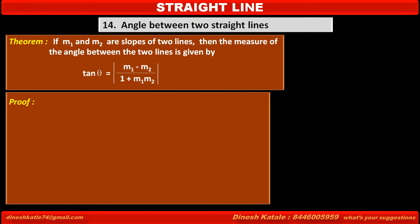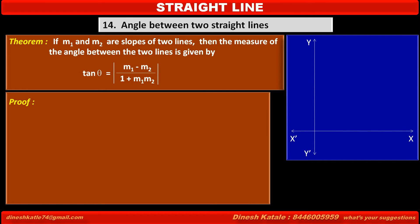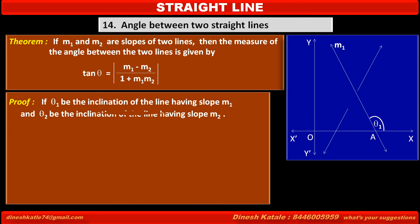See the proof. Consider a coordinate system. If θ₁ be the inclination of the line having slope m₁ intersecting the x-axis at point A, and θ₂ be the inclination of the line having slope m₂ intersecting the x-axis at point B, therefore tan θ₁ = m₁ and tan θ₂ = m₂. These two lines intersect each other at point P.